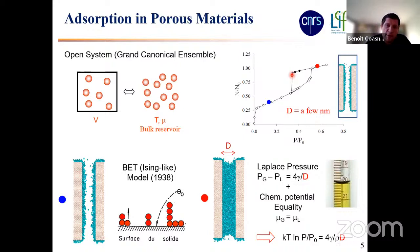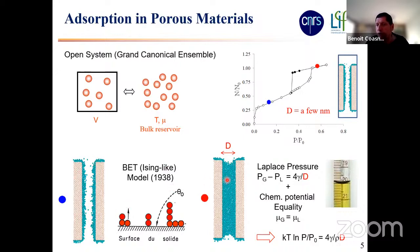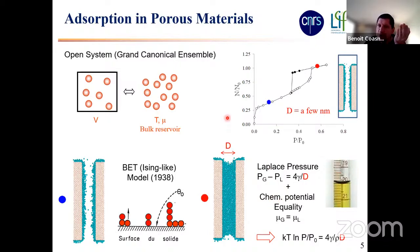In the literature, there are two very old theories to describe this. One is the BET model used to estimate the surface area — it's an Ising-like model in statistical mechanics used to describe the formation of an adsorbed film. For the capillary part, we use the Kelvin equation, obtained by writing the Laplace pressure condition: the pressure difference between the liquid and the gas phase compensates the surface tension term, where gamma is the gas-liquid surface tension and D is the pore size. If you add the chemical potential equality condition, you end up with the Kelvin equation.